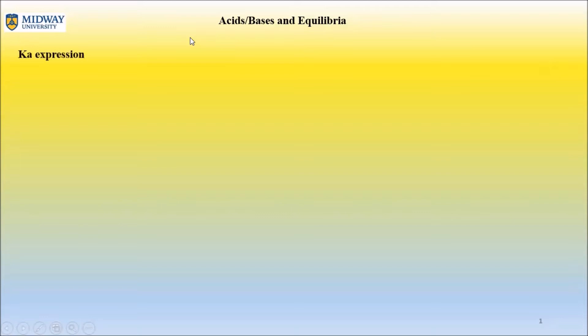Welcome back. As I mentioned in the objective overview video, we are going to learn how to write Ka or Kb expressions. A stands for acid, B stands for base. Statement 2 is very crucial: formation of H3O+ as one of the products indicates an acidic medium, and formation of OH- as one of the products indicates a basic medium. All of this is only applicable to weak acids and weak bases.